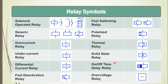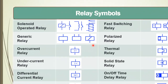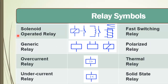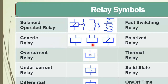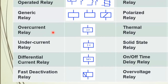Then we have different types of relays. The first is the solenoid operated relay, which has a solenoid and the contact of the relay. The next is the generic relay, for which we have three different types of symbols. Then come the different types of relays based on their functionality.